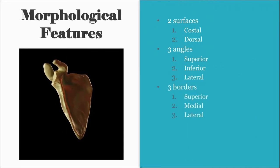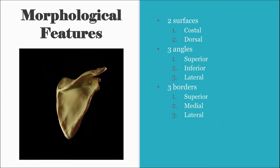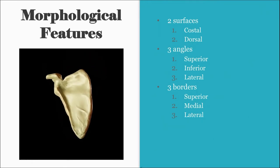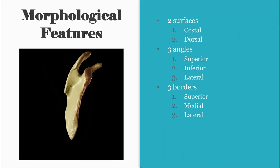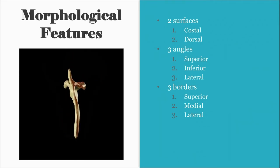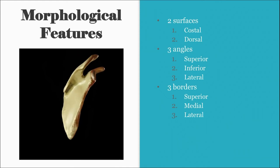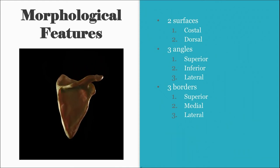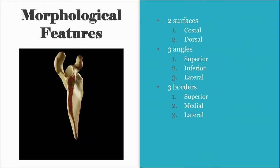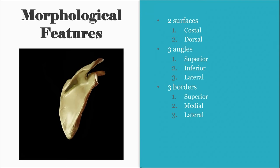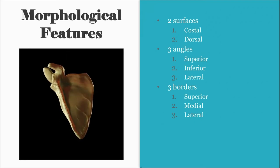There are three borders: the superior border, which slightly dips to form the suprascapular notch; the medial border, which slightly dips medially where it is associated with the root of the spine of the scapula; and the lateral border, which is the thickest.